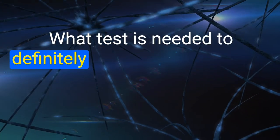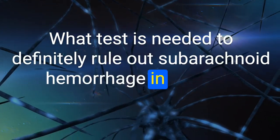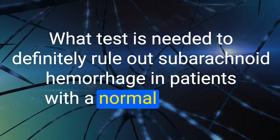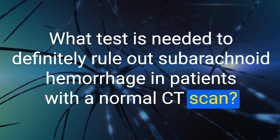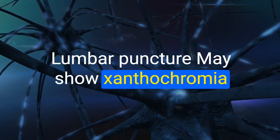87. What test is needed to definitively rule out subarachnoid hemorrhage in patients with a normal CT scan? Lumbar puncture — may show xanthochromia.